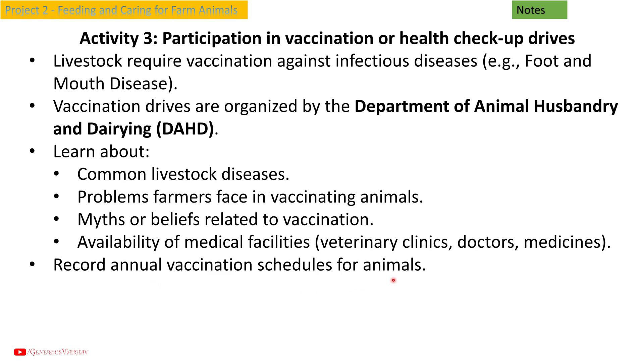Record annual vaccination schedules for animals. Activity 4: Preparing a health record of the selected animal.